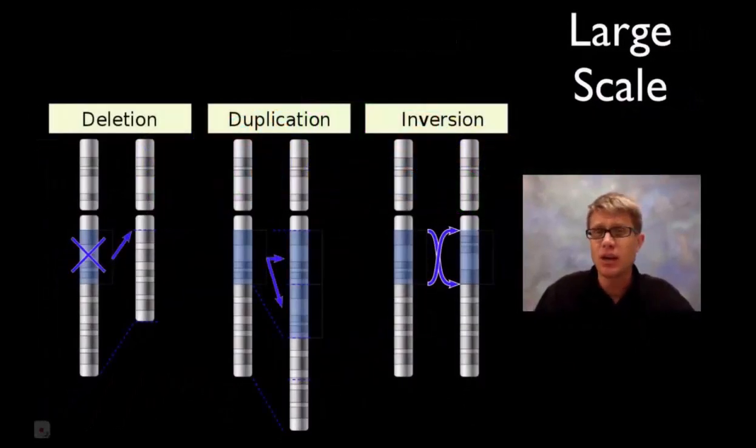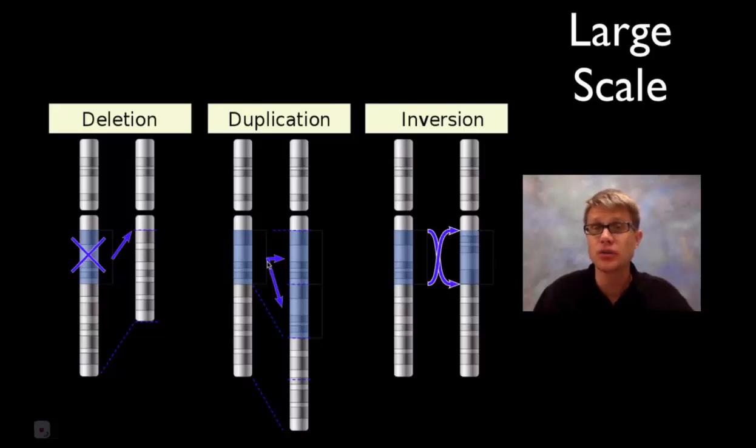We can also have major changes or large scale changes. This could occur during mitosis or meiosis. Instead of losing one letter or affecting one gene, we could lose big portions of the chromosome and all the genes found within that. This would be a deletion where we're missing this huge chunk, which could be hundreds if not thousands of genes. Or this could be a duplication where we're duplicating a portion during the S phase.